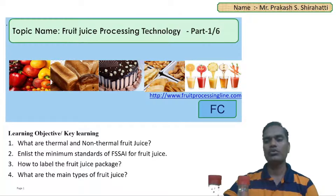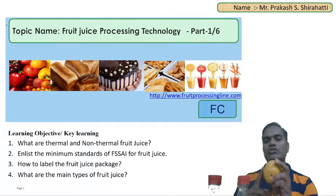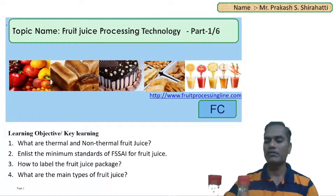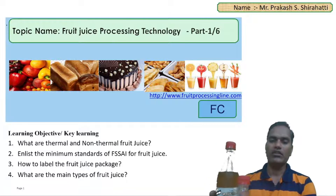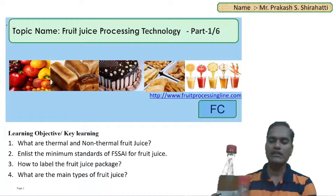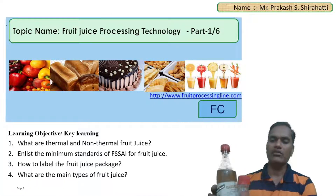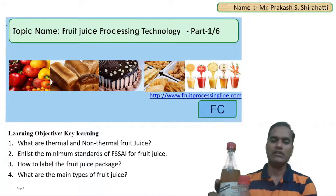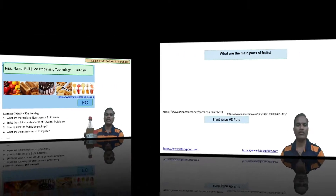After that, how to extract the fruit-containing fruit pulp or juice, and how to convert it to different types of fruit juices — these are the points discussed in the second part. Different types of fruit juices involving the technology, specifications, and recipes are all discussed.